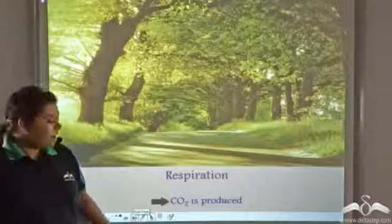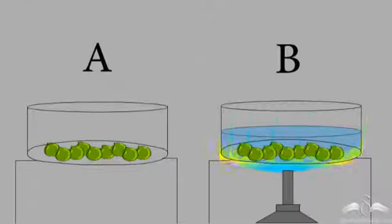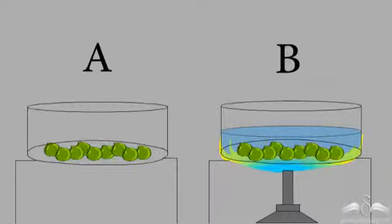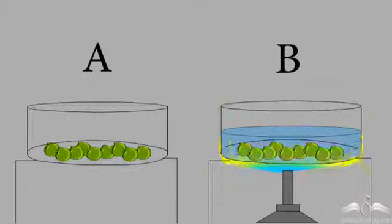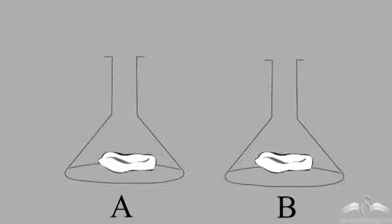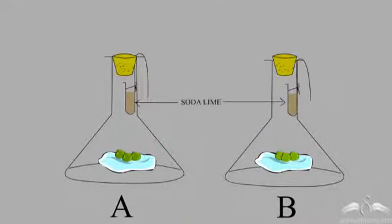So plants respire to give out carbon dioxide. Now let us perform a simple experiment to see if oxygen is taken up during respiration. We take two petri plates with a few beans. The beans in petri plate B are heat-killed, while the seeds in petri plate A are living, germinating seeds. These beans are kept in conical flasks, water is sprinkled, and then soda lime is put in.